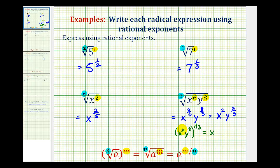So we'd have x to the power of six times one-third, which is two, and y to the power of eight times one-third, which is eight-thirds. So we can see the result would be the same.